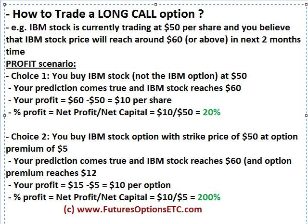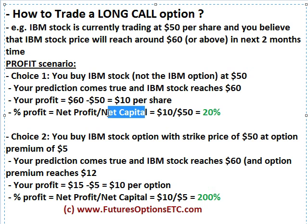So basically you have a bullish view on IBM stock price. You have two options here. One is that you actually buy the IBM stock, and the second one is that you buy the IBM call option. Let's see these scenarios one at a time in terms of profitability calculations. Assume that you go for choice one where you are actually buying the IBM stock at $50 — that is the net capital you will need.